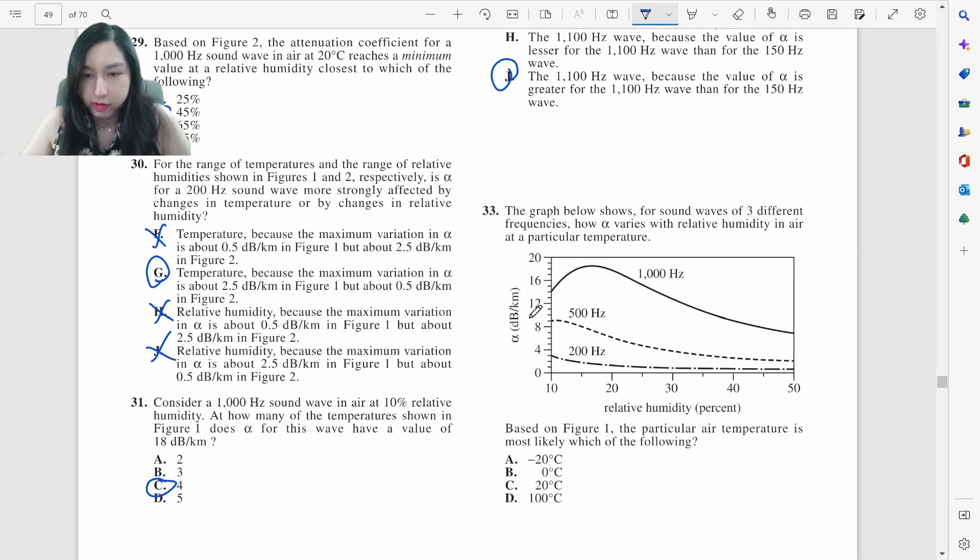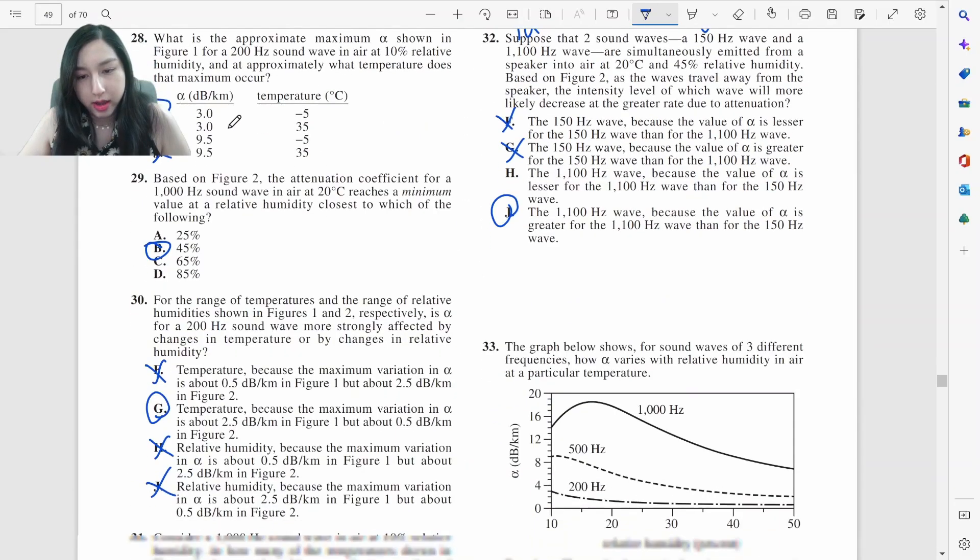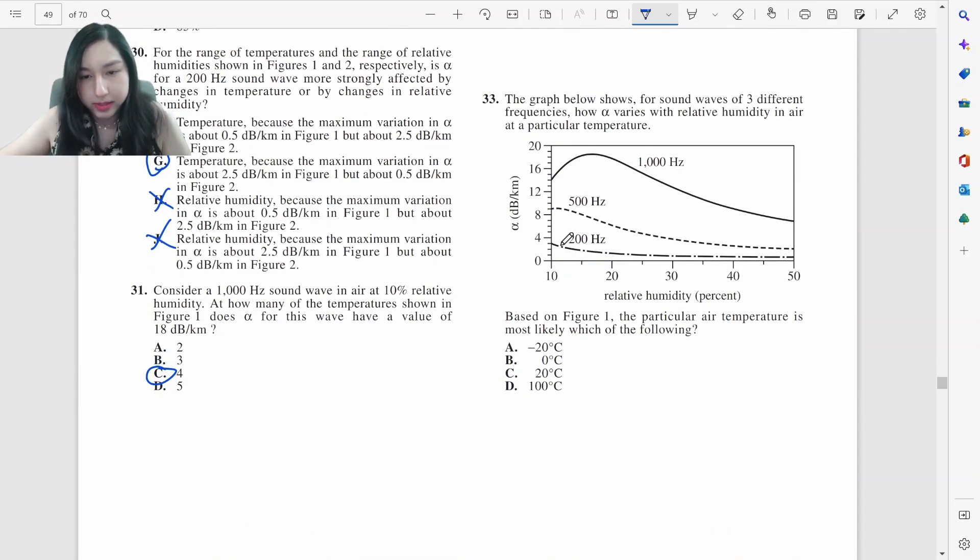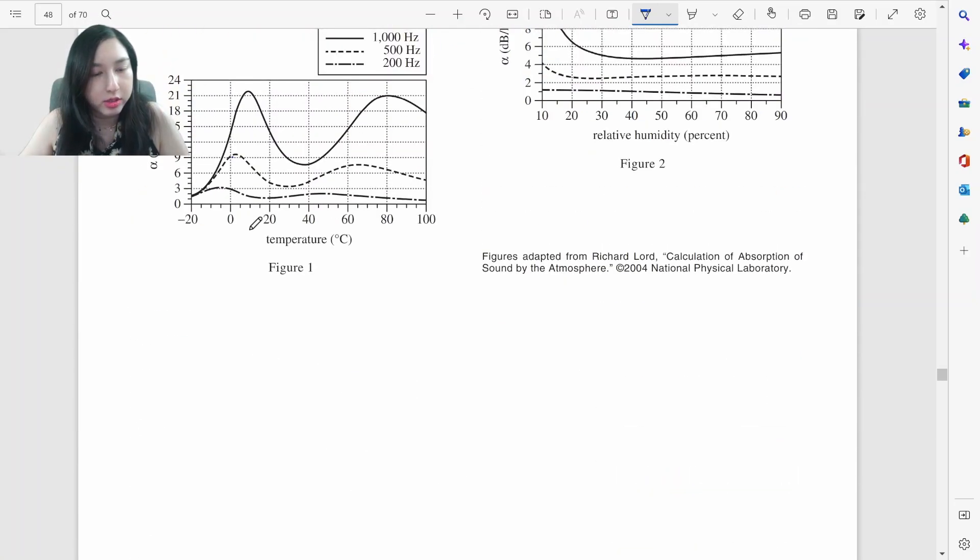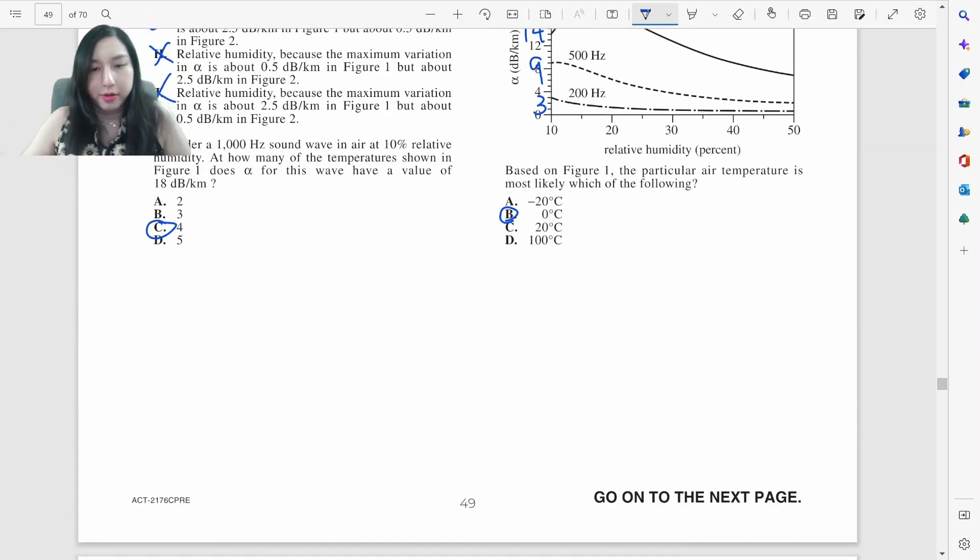This graph of different frequency, how alpha varies. So the particular air temperature is, so they did this at some air temperature that we don't know. This graph was done at 10% relative humidity. So we should look at 10% humidity. Then at 10%, this is three, this is nine, this is 14. So we should look for the point on this graph where it's three, nine, 14. It would be about this three, nine, four. No, no, this would not be nine. Then this would be three, nine, 14. Then it's going to be zero B right there.